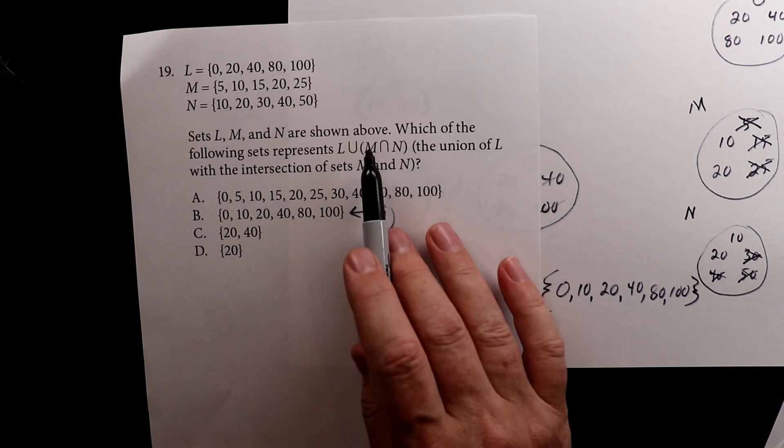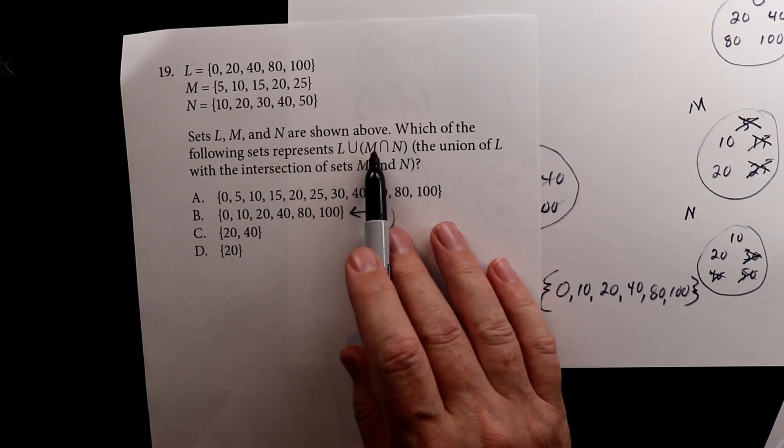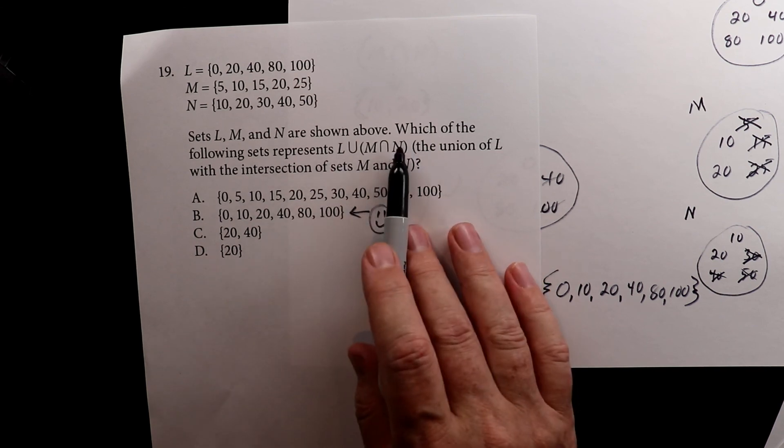So just like with PEMDAS, you do your parentheses first. And then once you solve that, then you go left to right. That's it.